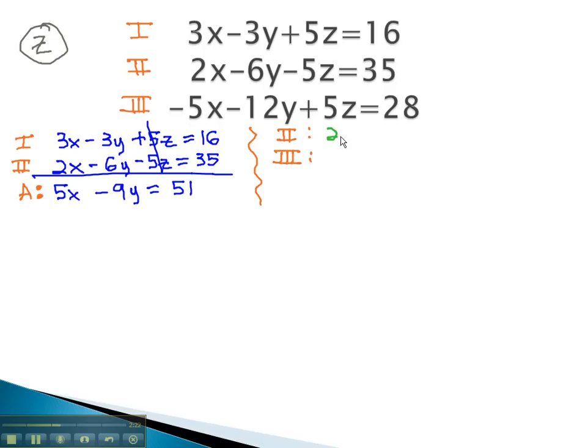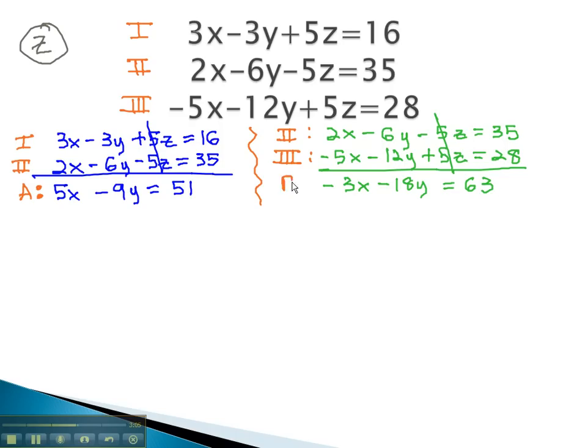Equation 2 was 2x minus 6y minus 5z equals 35. Equation 3 is negative 5x minus 12y plus 5z equals 28. We already have opposites in front of z, and we've eliminated it a second time. We now have negative 3x minus 18y equals 63. Notice we've eliminated the z a second time. Let's call this second time B.